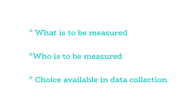Who is to be measured means: who are the people we are interested in? That is the second important issue. The third important issue is the choice of data collection techniques, of which there are various types discussed in Unit 3.